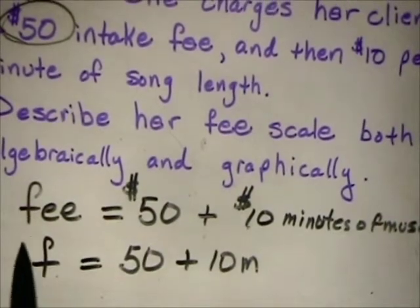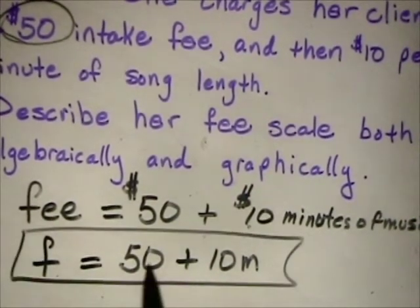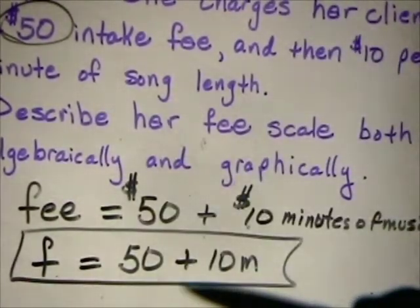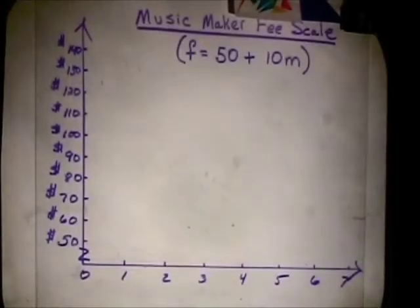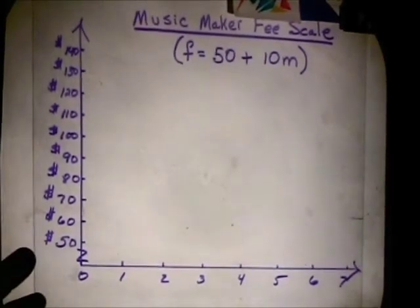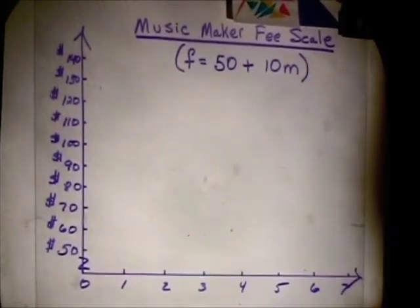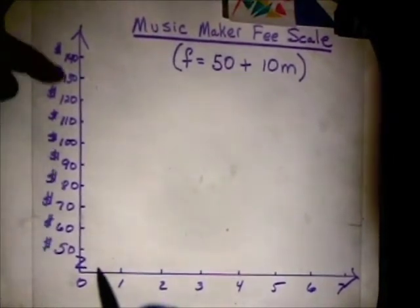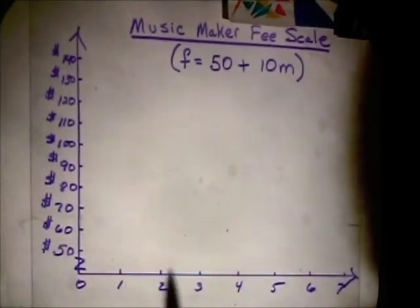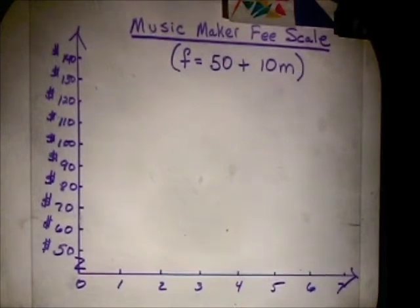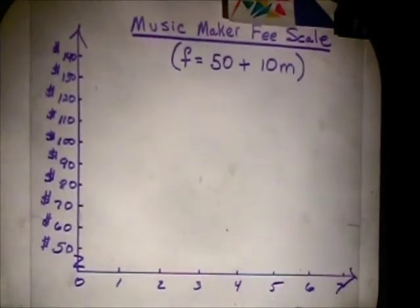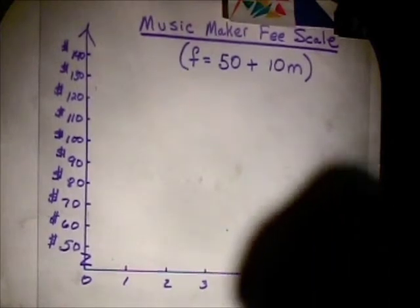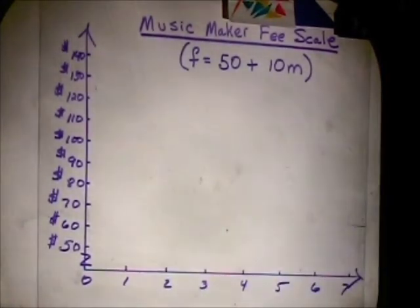Now let's look at a graph — the music maker fee scale. We're going to break the vertical axis so we can begin at $50, because that's the least amount of money she's going to earn. The horizontal axis represents the length of the music in minutes, and we'll take it out to about seven minutes.